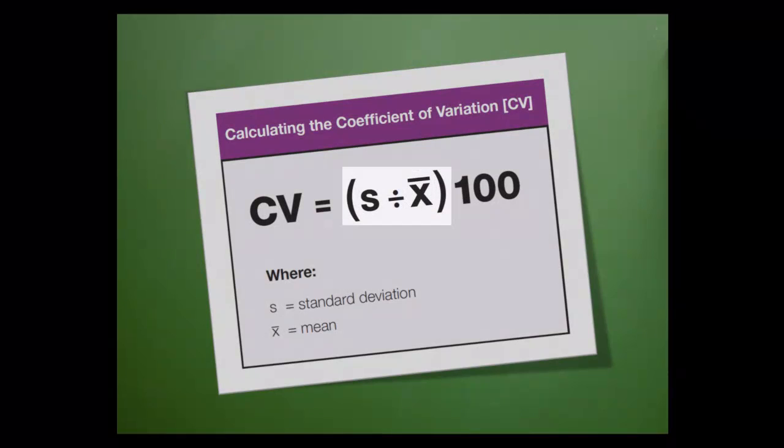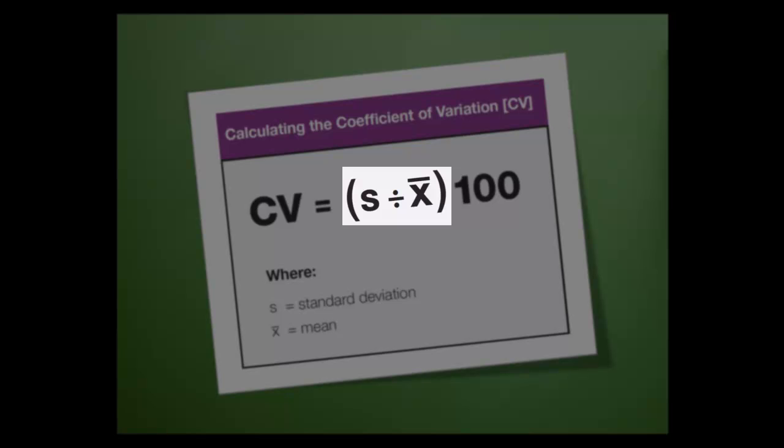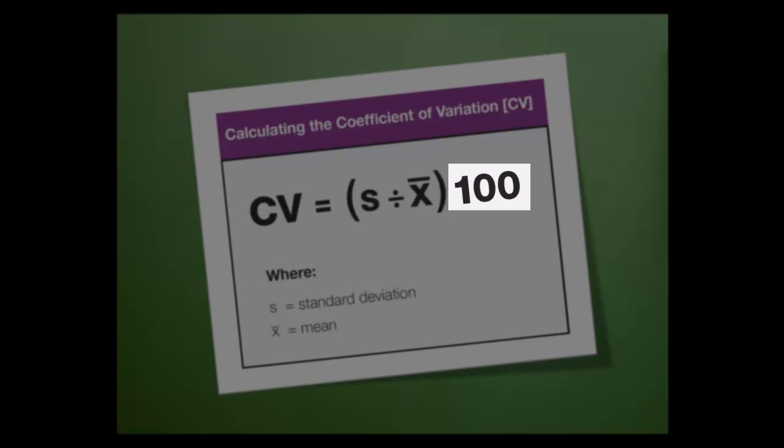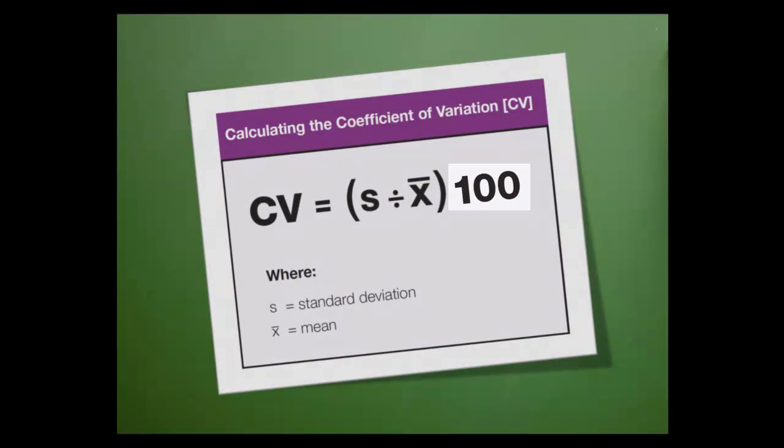So, this part of the formula requires us to divide the standard deviation by the mean. The result is multiplied by 100 in order to express it as a percentage.